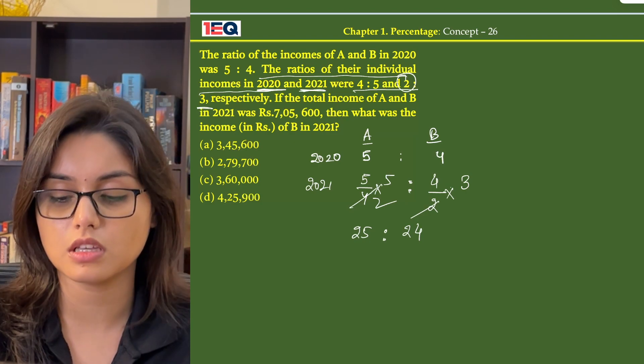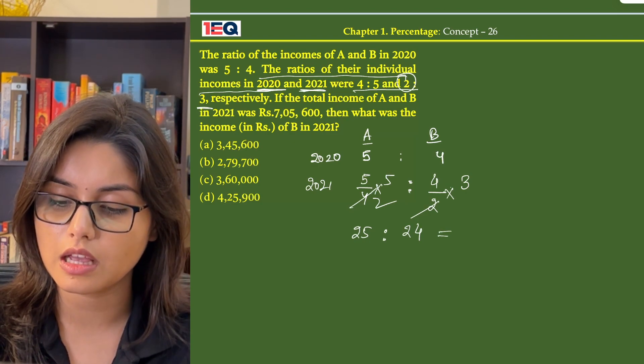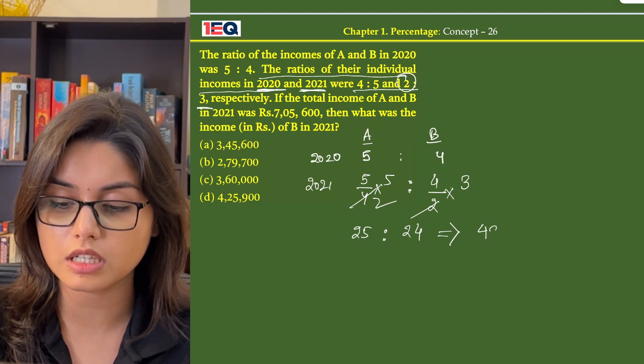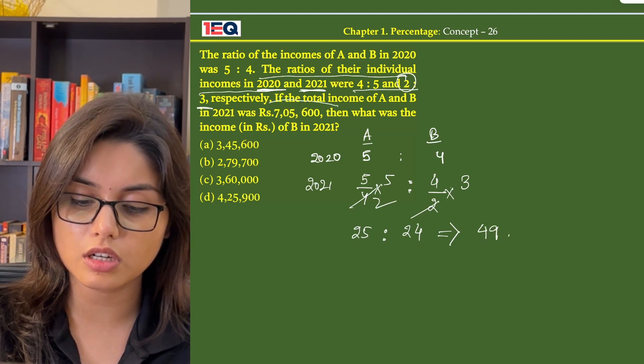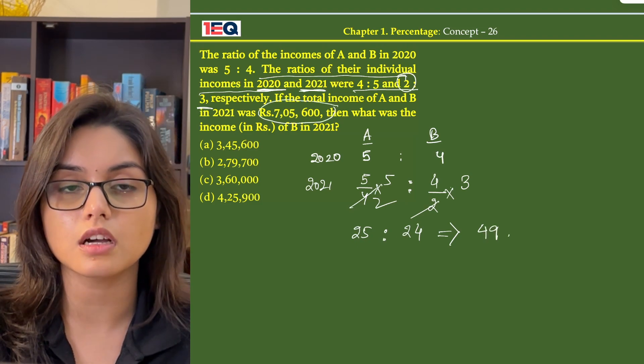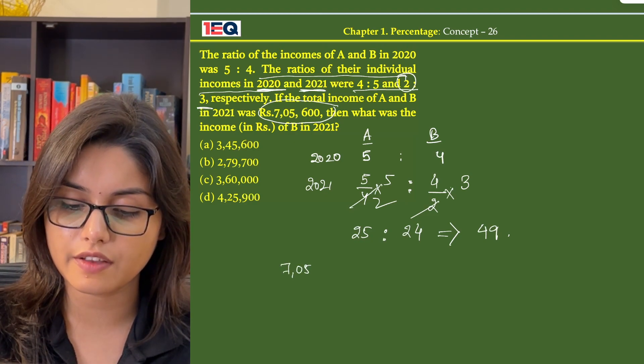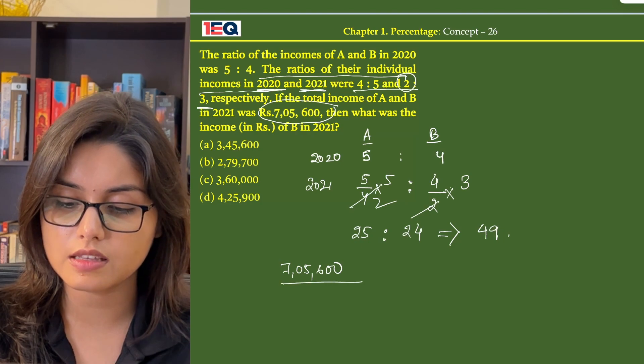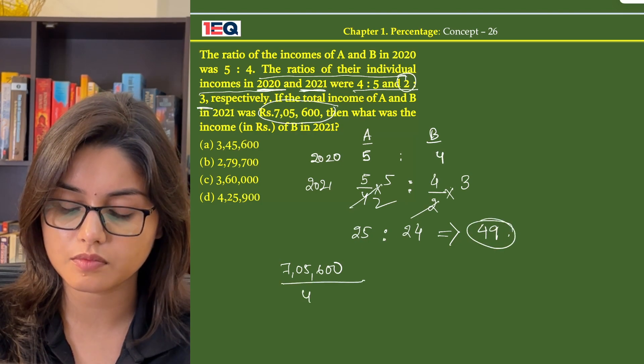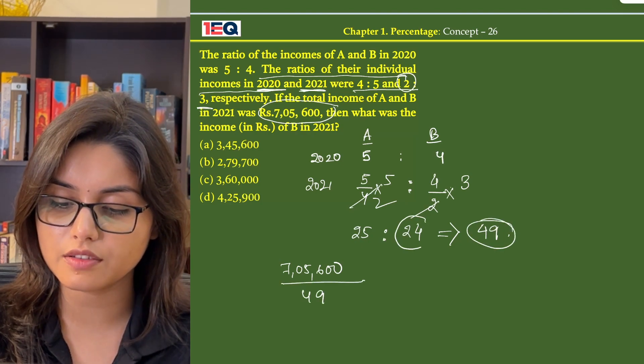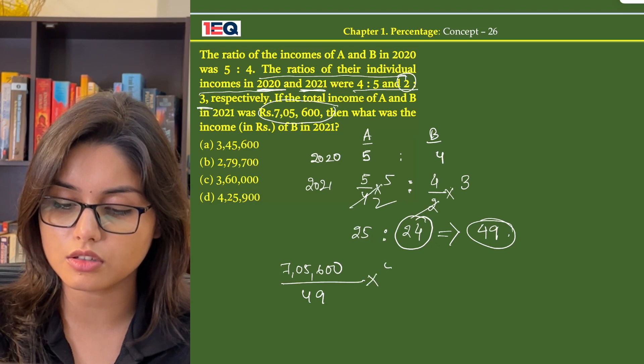So the ratio of A to B is 25 to 24, and their total is equal to 49. Now the given total of A and B's income is 7,05,600. So 7,05,600 is the value of 49, and we are supposed to find the value of B, that is 24.